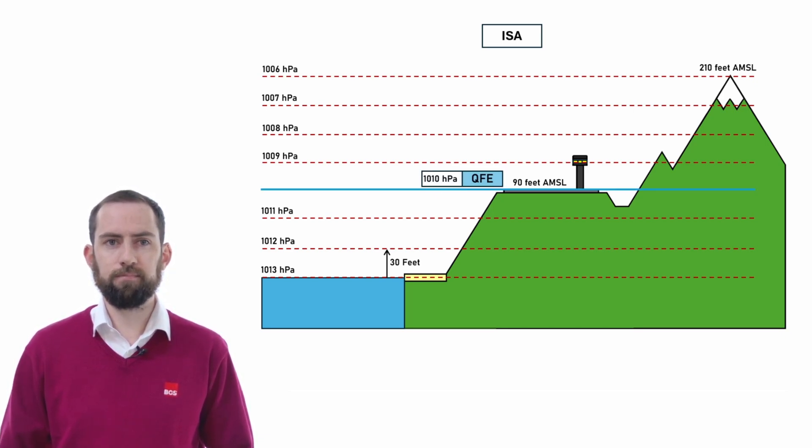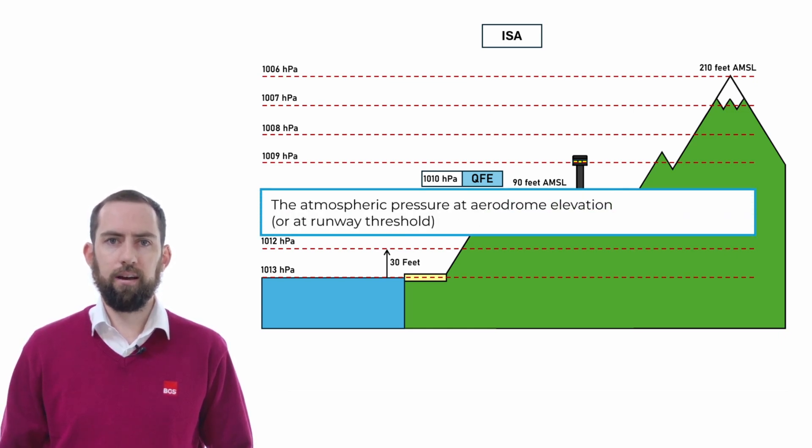And this brings us on to our first definition, QFE. QFE is quite simply the atmospheric pressure at aerodrome elevation or at runway threshold. Think of the FE as standing for fixed elevation. Now QFE is the most fundamental of the Q codes associated with altimetry. It's the most fundamental that we'll be looking at since the others are derived from the QFE.